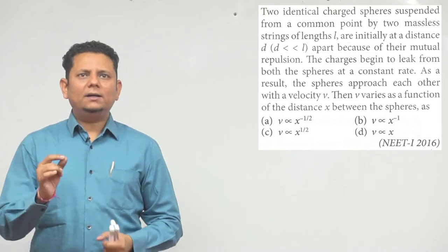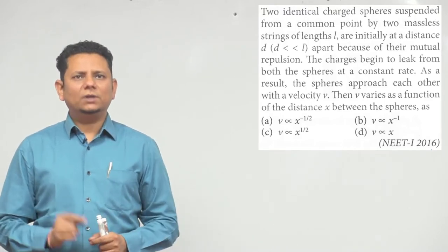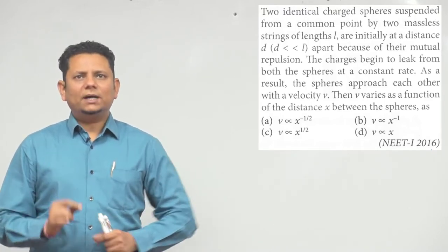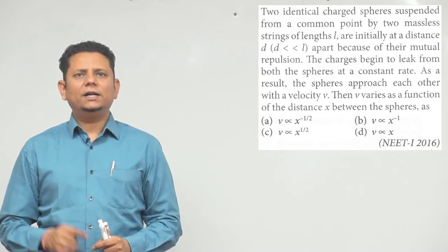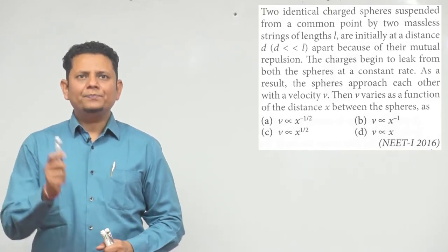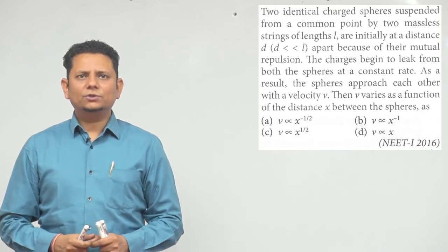Say d apart because of their mutual repulsion. The charges begin to leak from both the spheres at a constant rate. As a result, the spheres approach each other with the velocity v.